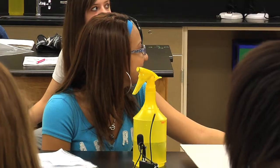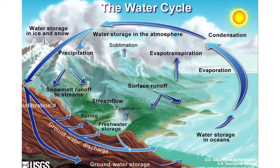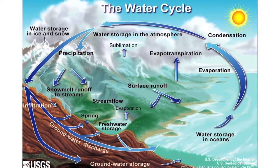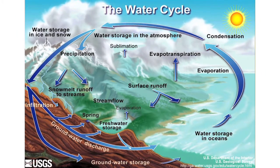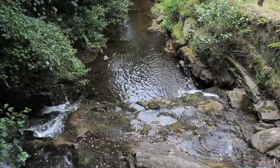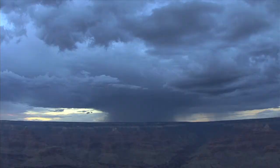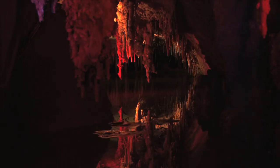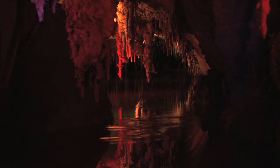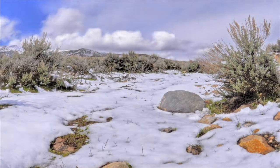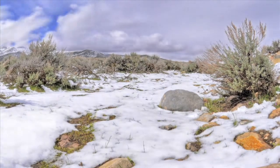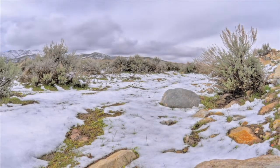We hope you enjoyed the water journey lab. Let's take a look at the different parts of the water cycle. The water cycle is the continuous movement of water on, above, and below the surface, driven by the sun. The exchange of heat energy allows the molecules to change states at different stages of the cycle.